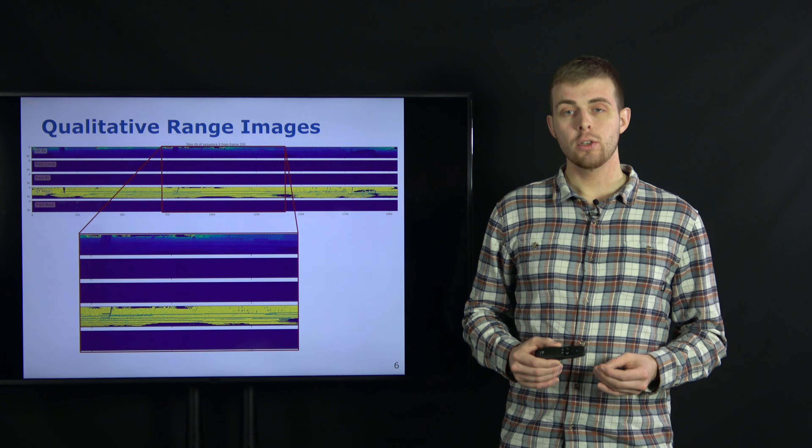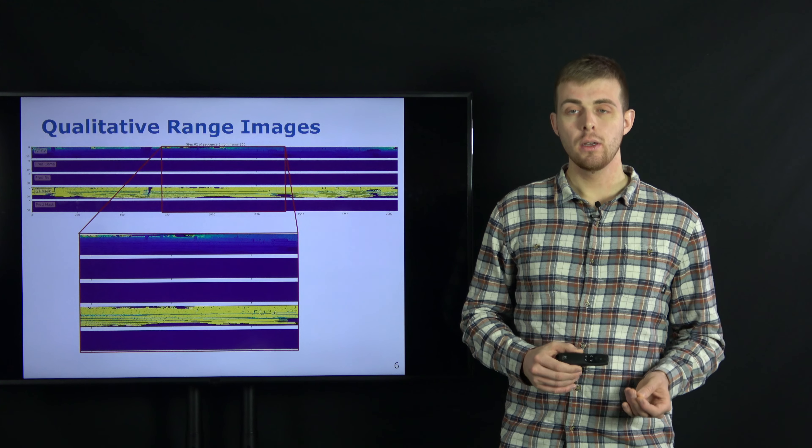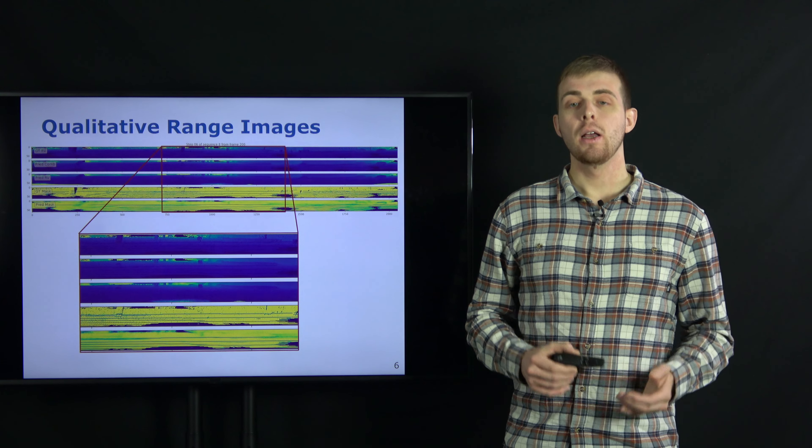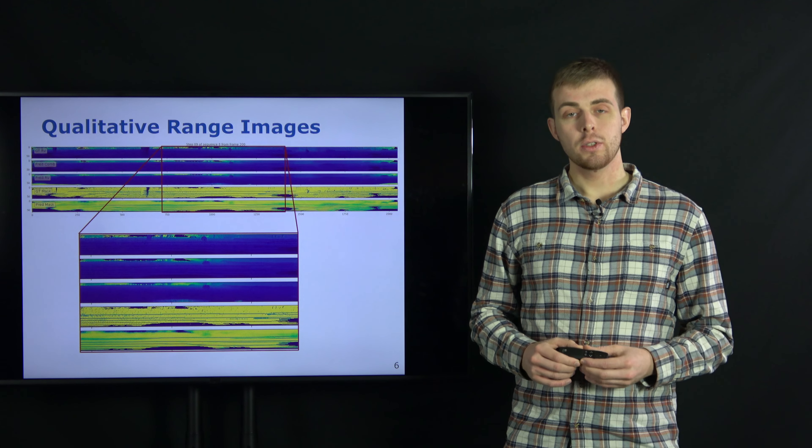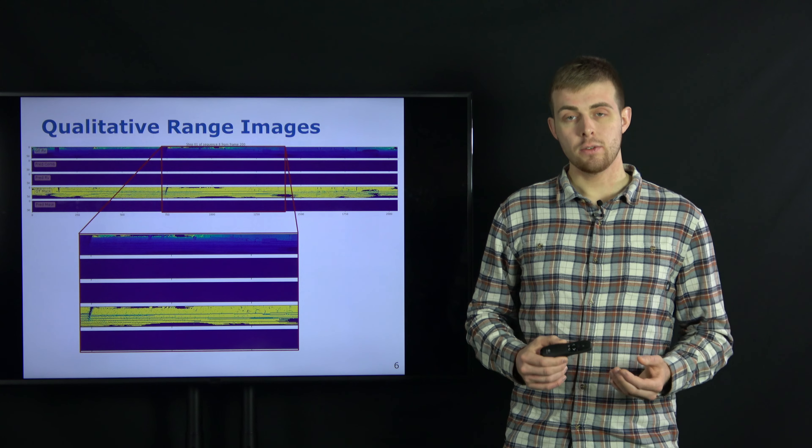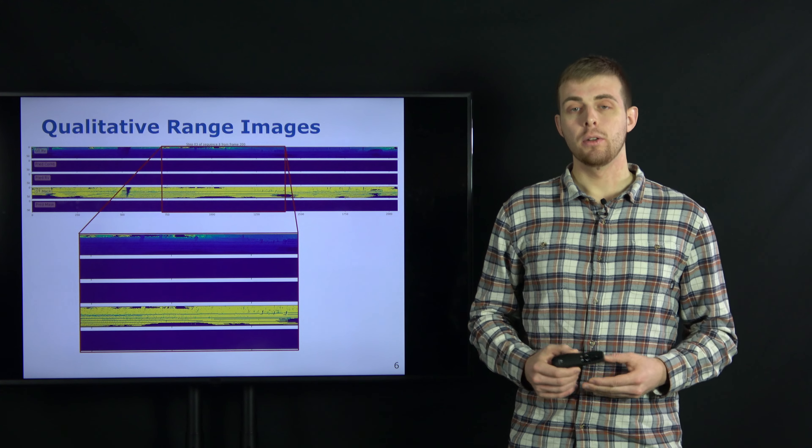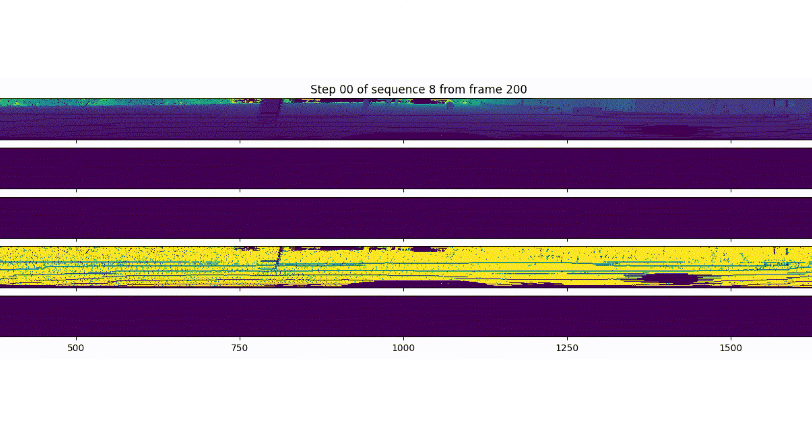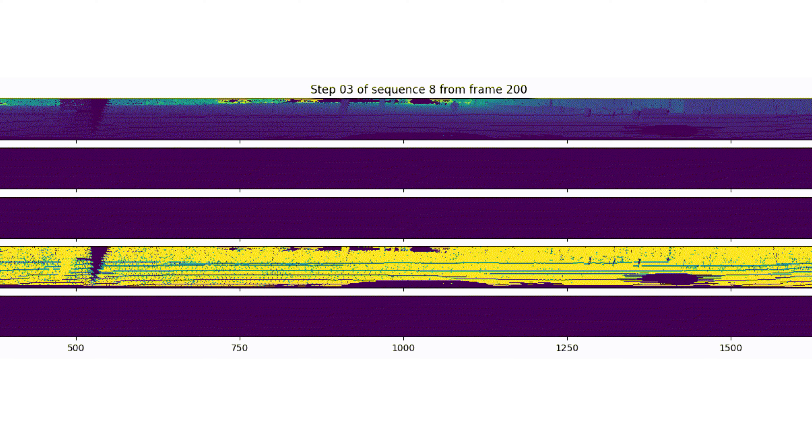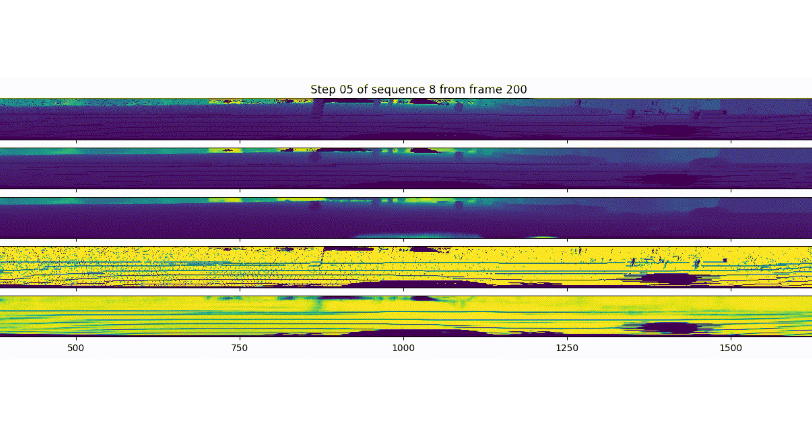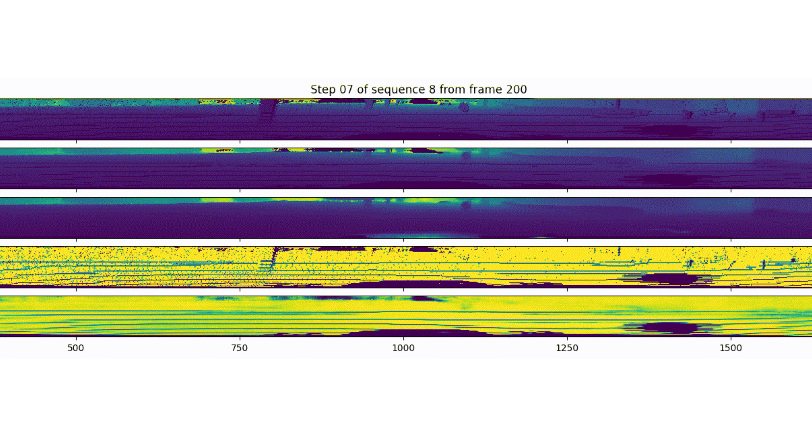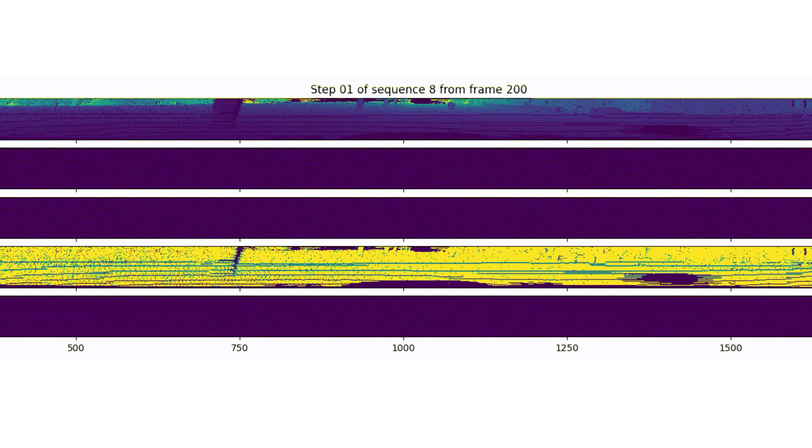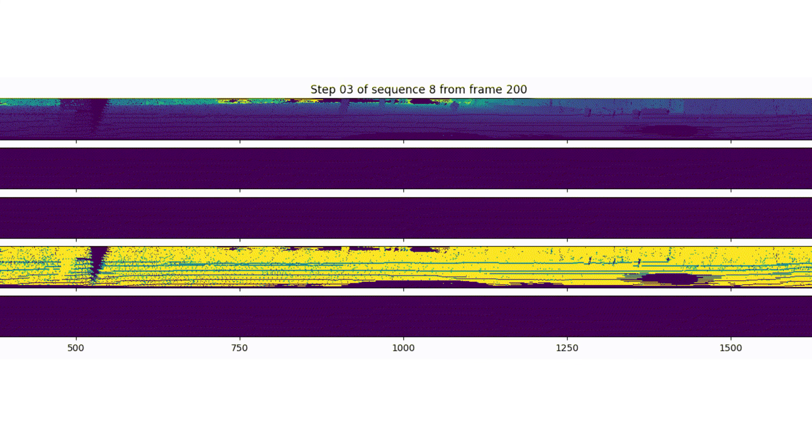Here I would like to show you some qualitative results. You can see the past and future range images, as well as our predictions for KITTI odometry sequence 8. At the top we show the ground truth range image, below is our prediction. Row 3 is the raw range prediction before masking, and row 4 and 5 illustrate the ground truth valid point mask as well as our predicted mask. You will first see five received past frames and then our five predicted frames. The LiDAR frequency is 10 Hz.